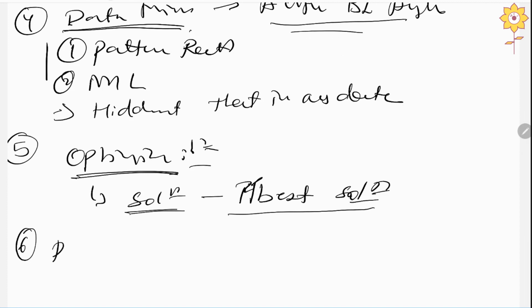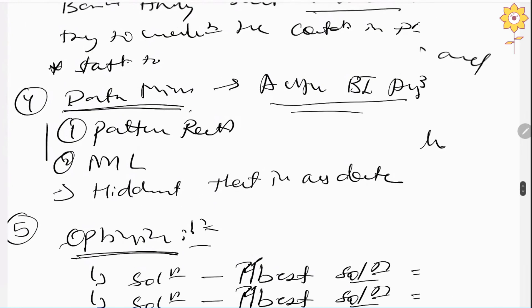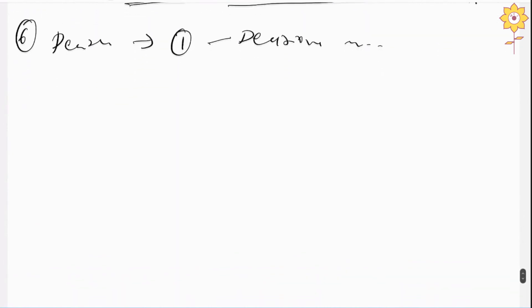The last component is decision. After the optimization phase, we have the best solutions segregated. From those best solutions, we choose and utilize one solution, which is considered as a decision that can be used to solve the problem. These are the six main components of any business intelligence system.